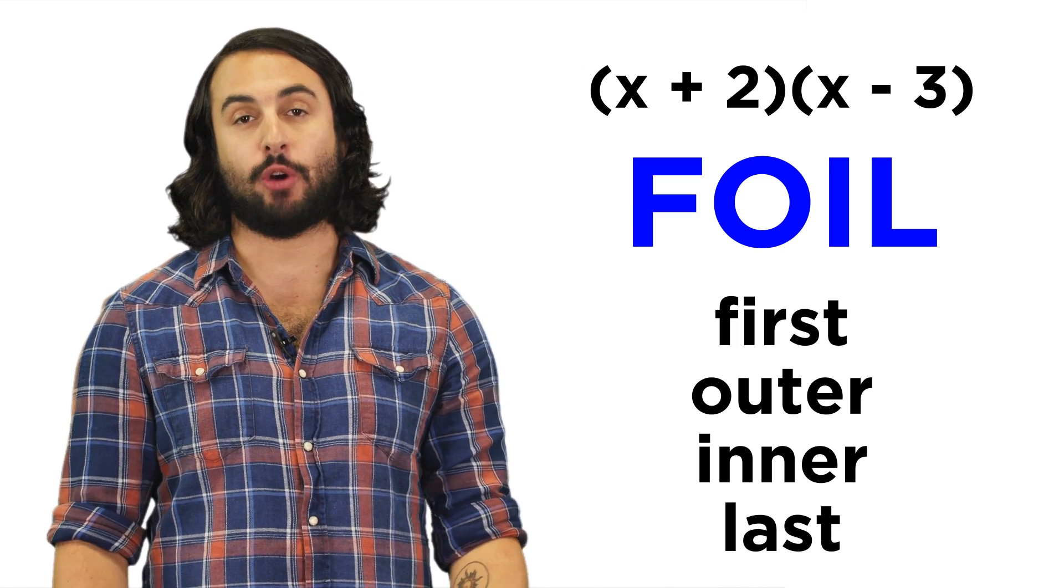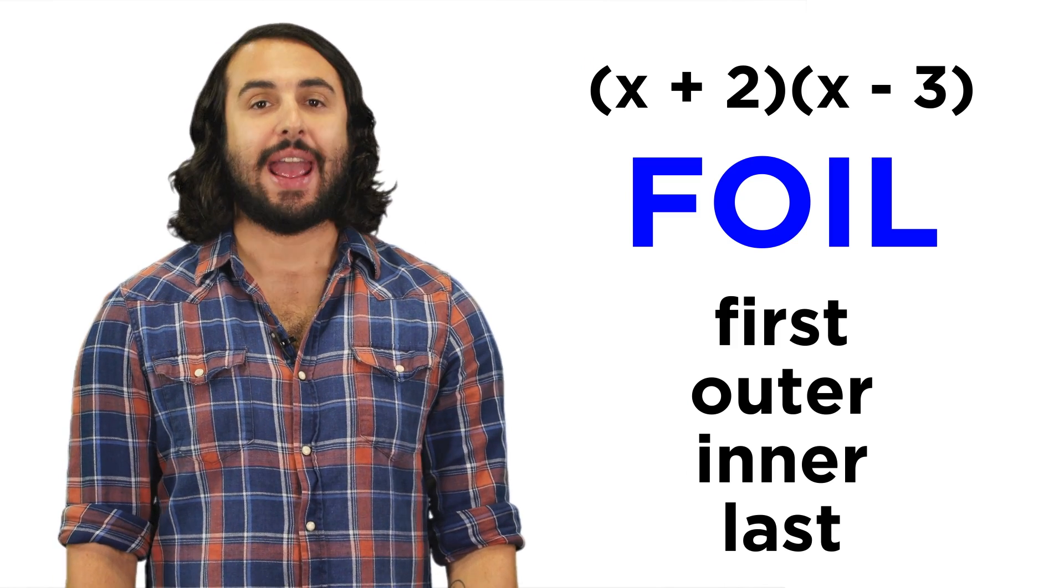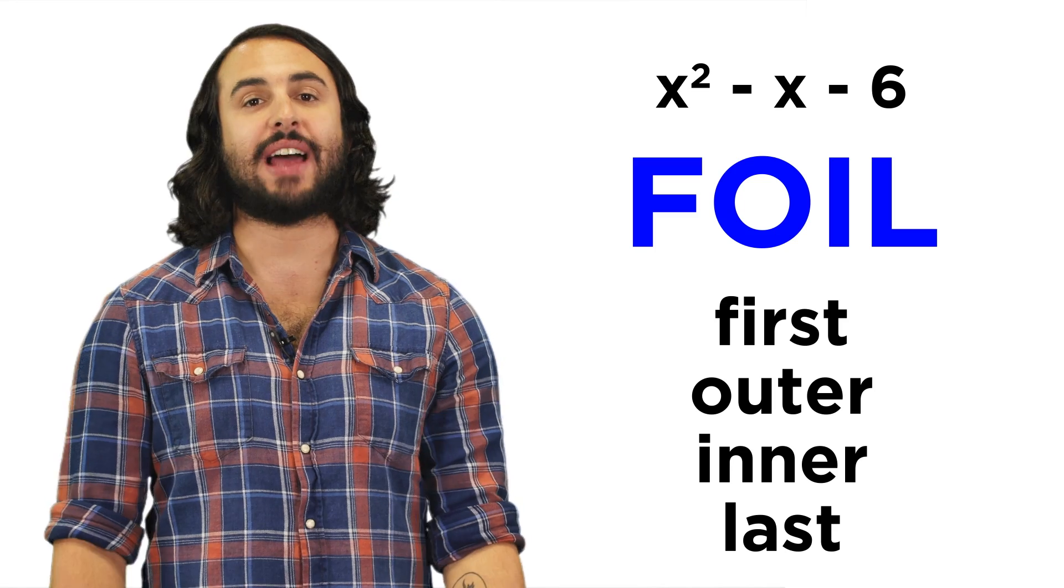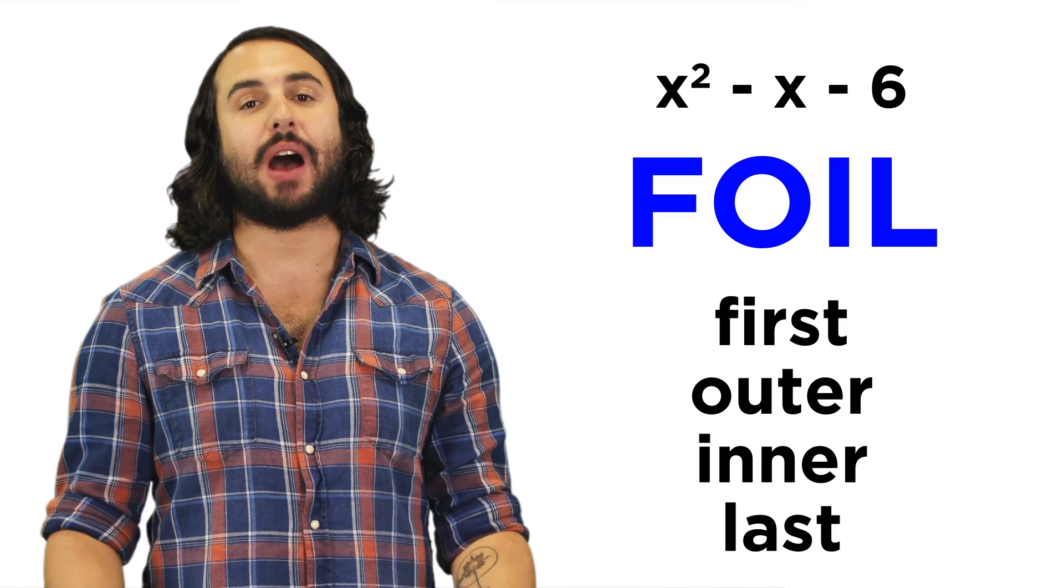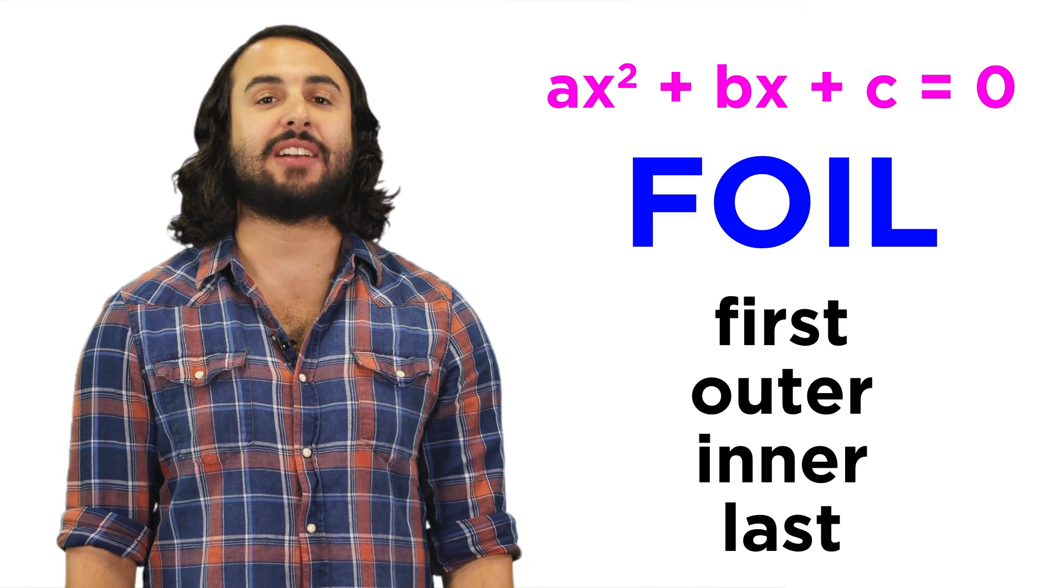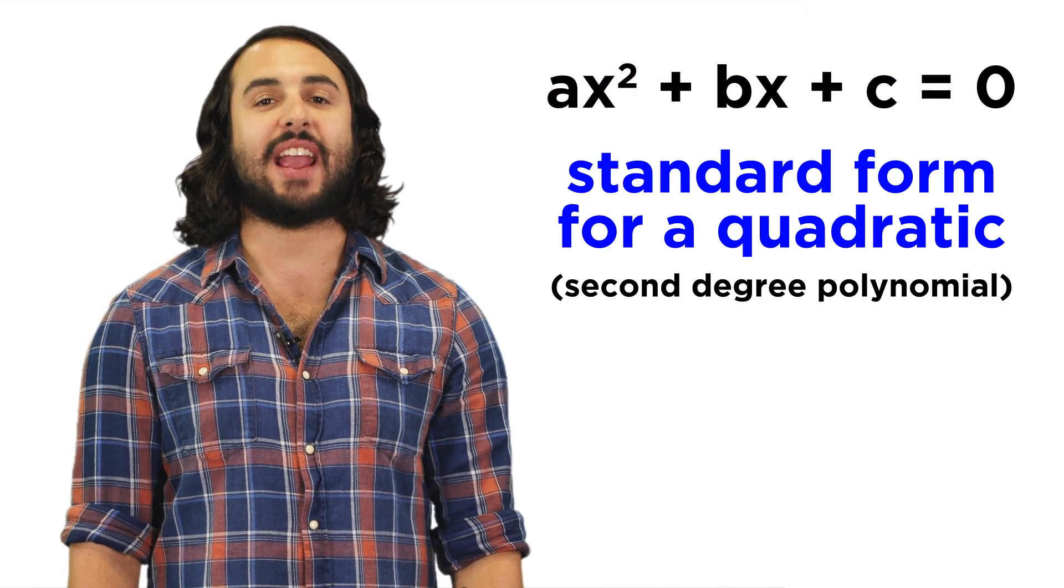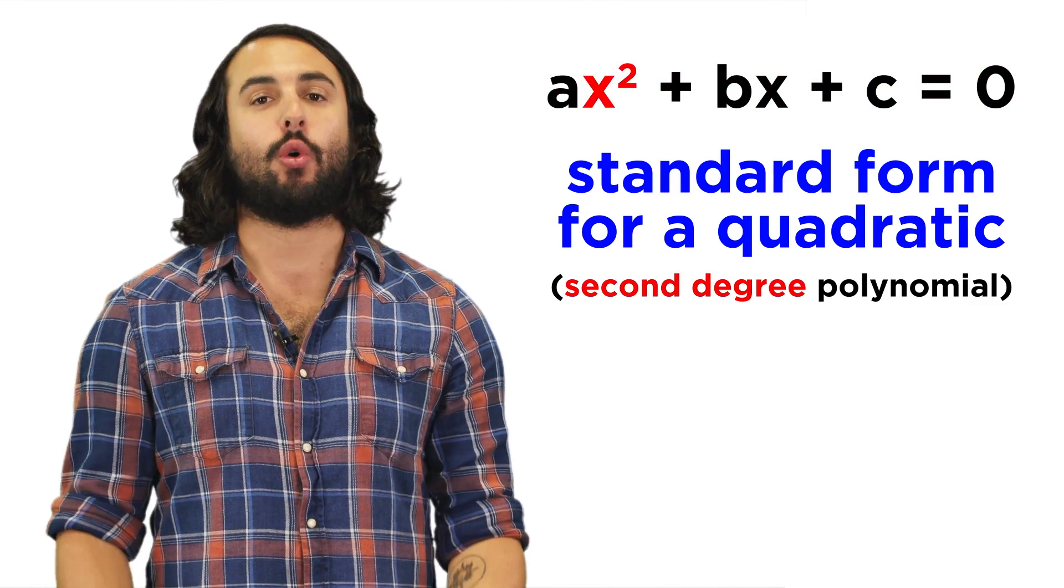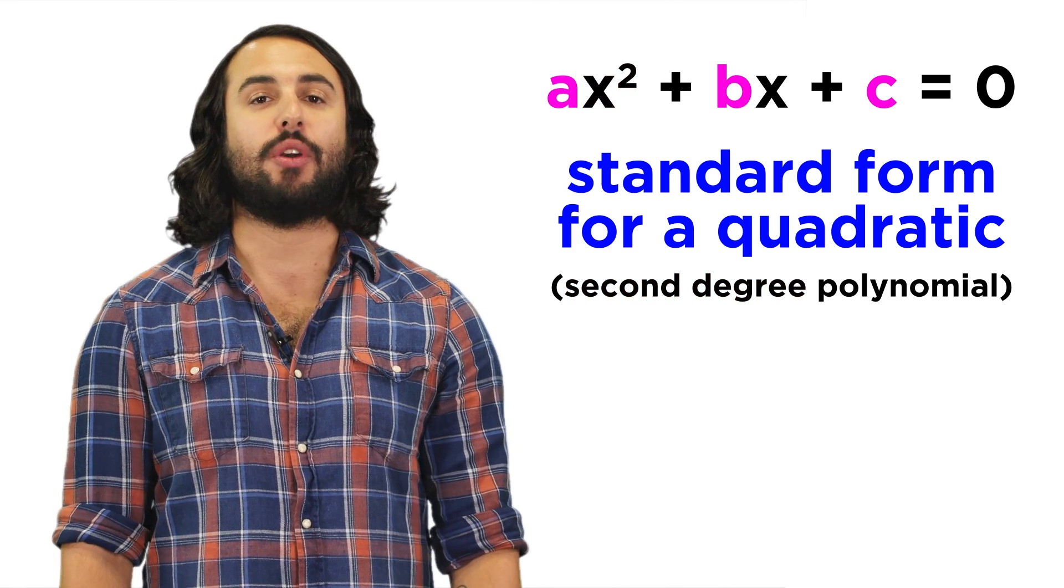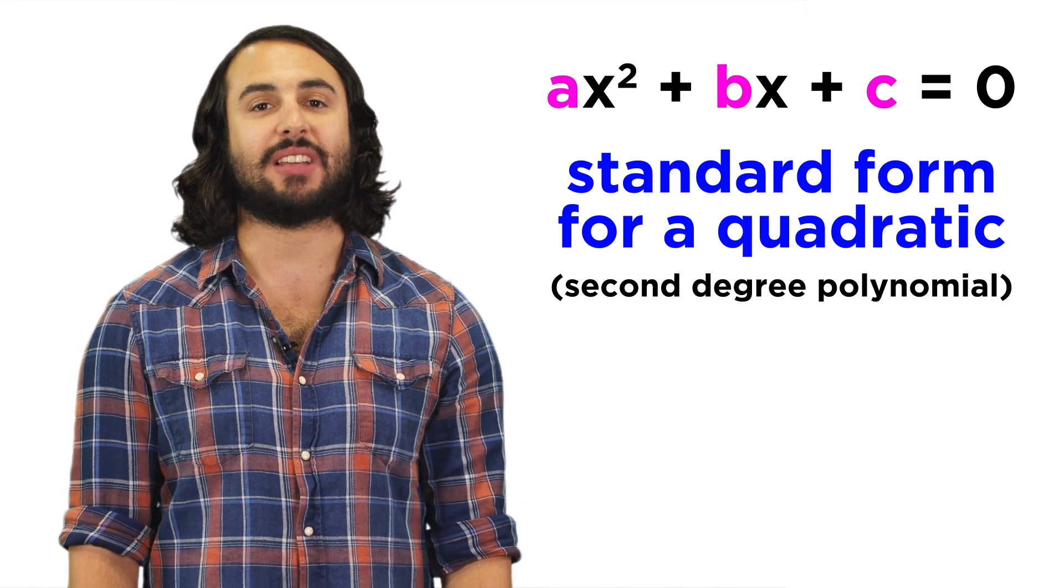We just learned how to multiply binomials by the FOIL method, and understanding this technique will allow us to express simple polynomials in the form ax² + bx + c = 0. This is the standard form for a quadratic, or second degree polynomial, with a, b, and c being some integers.